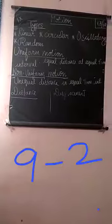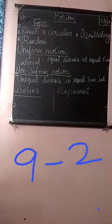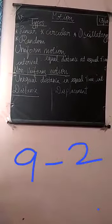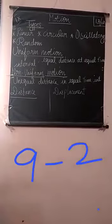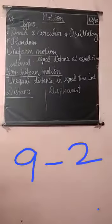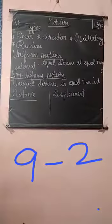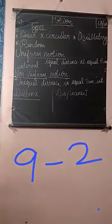Next one is non-uniform motion. Here, unequal distance in equal time. Take the same example. For one hour, equal time. So, for one hour, a car moves 30 kilometers.